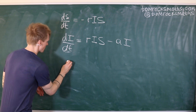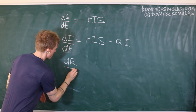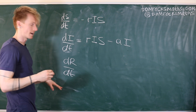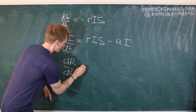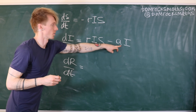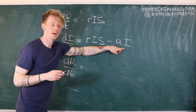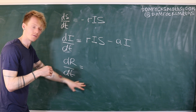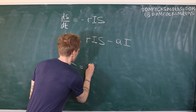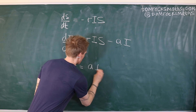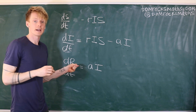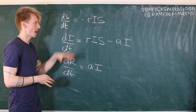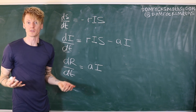And then finally our rate of change of the removed population, R — dR/dt — this one is equal to the growth here, because the infectives are moving into the removed part of our population at this rate, A·I. So this is just the same basic SIR model that we've seen before.